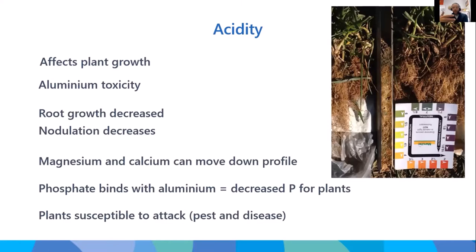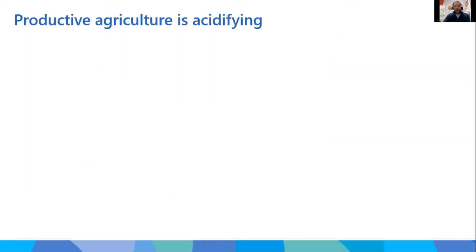A lot of the work we do keeps uncovering evidence of production impacts that don't appear in the literature. Where you've got acid soils, you tend to get a lot more disease and pest impact. We think a stressed plant becomes more susceptible to disease and pathogens, and also becomes a target for pests. Removing this acidity from the system not only gets rid of aluminium and supports legume nitrogen fixation, but it makes plants stronger and healthier, making the system more resilient when stresses hit.